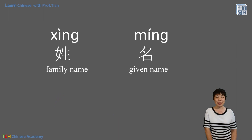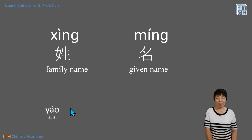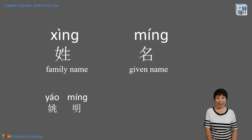So, 姓 and then the 名 — this is the order. Let's look at a Chinese name: 姚明. Have you heard about him? 姚明.